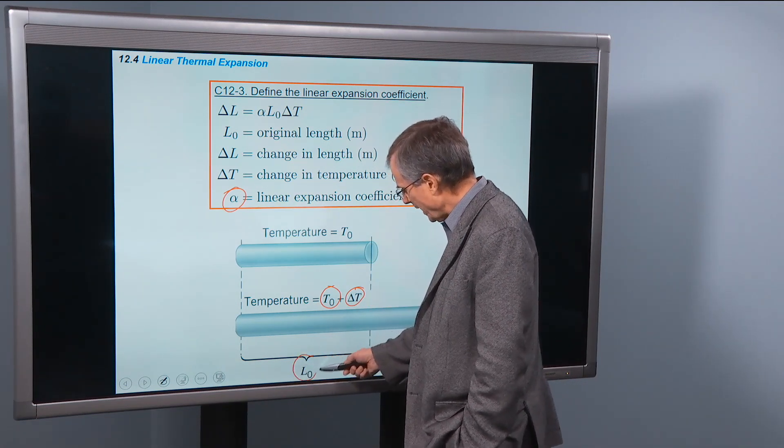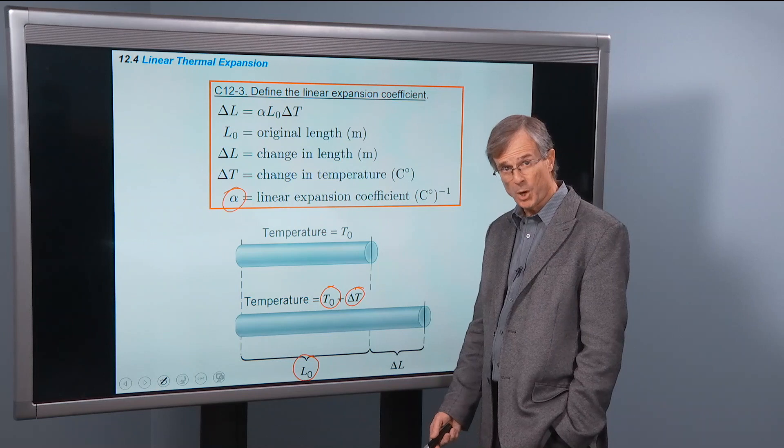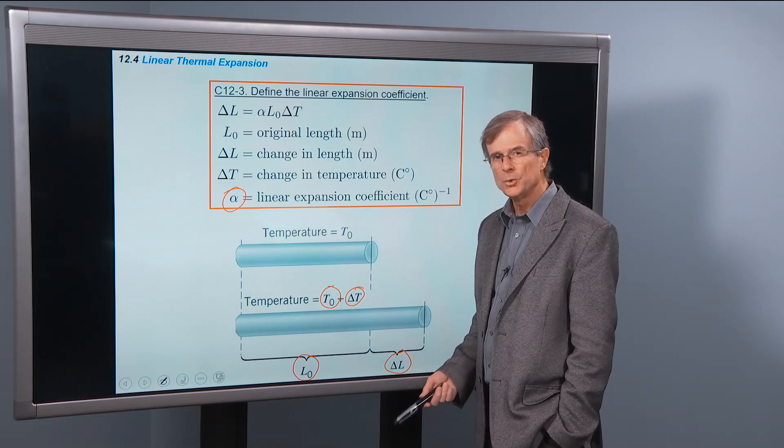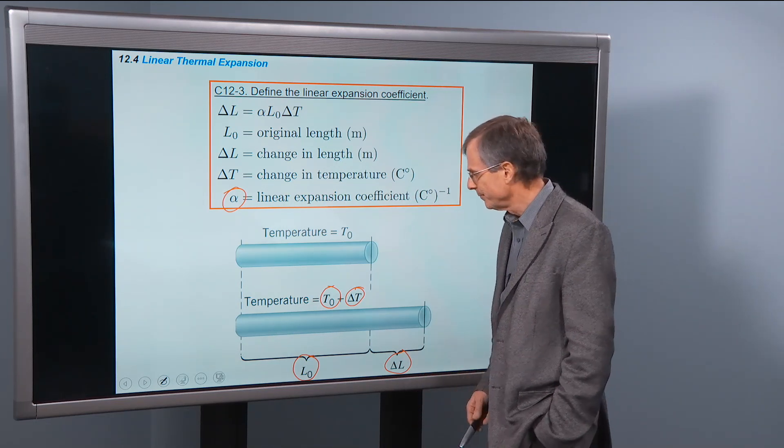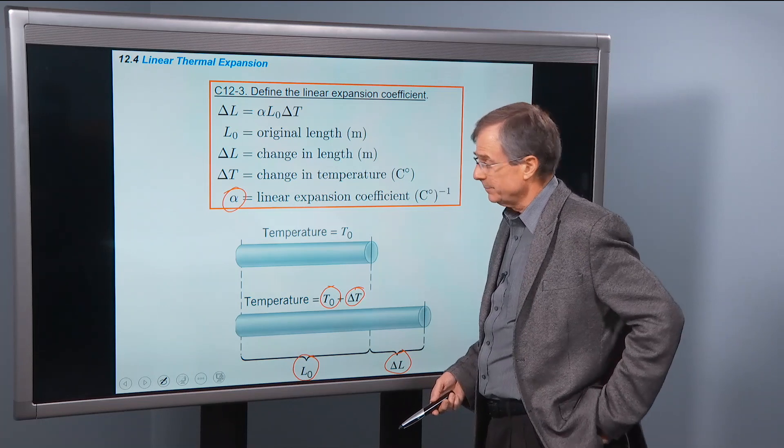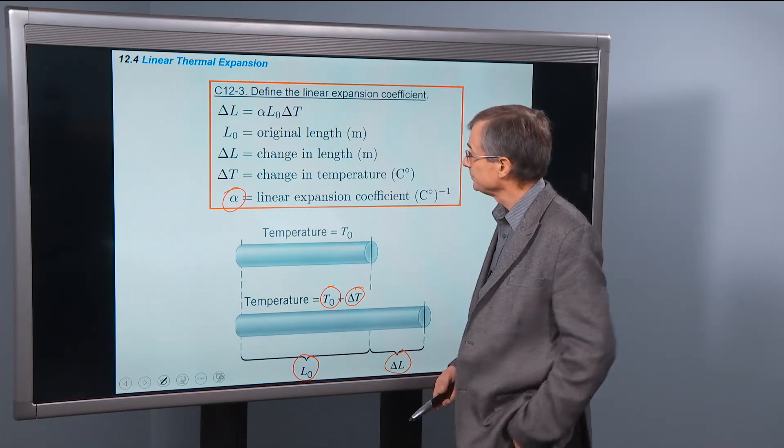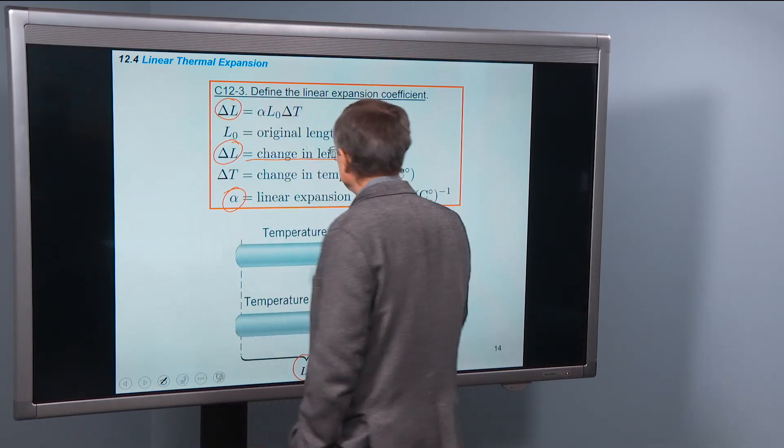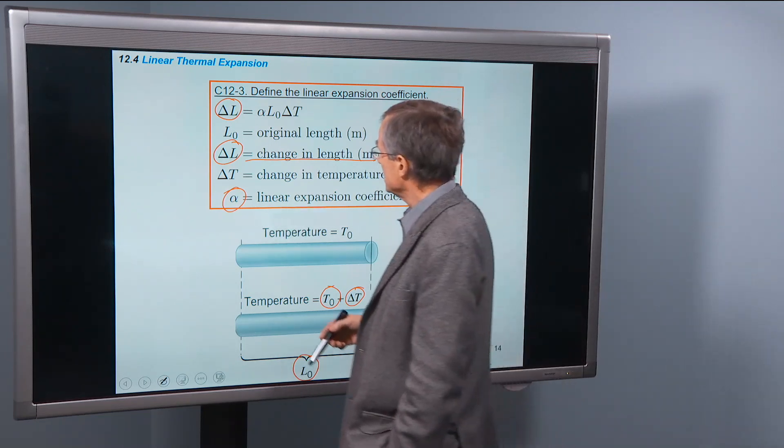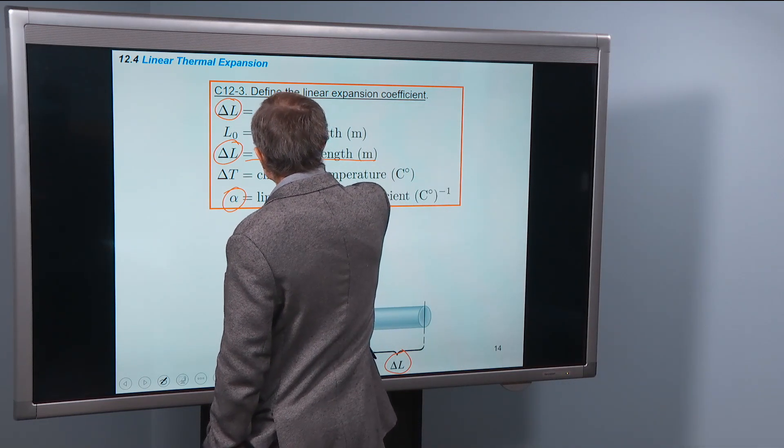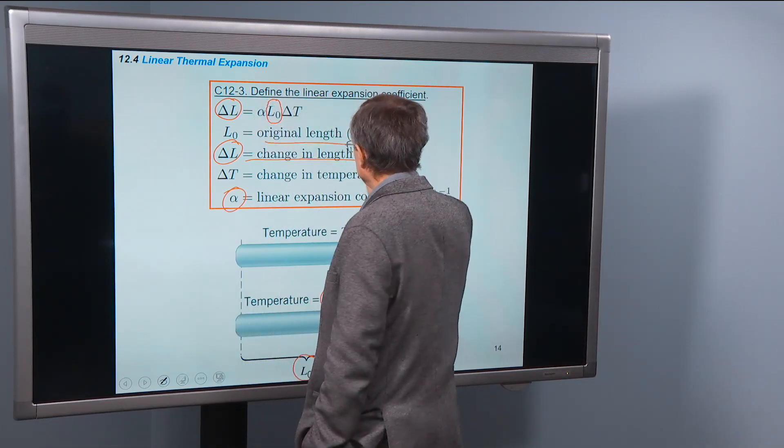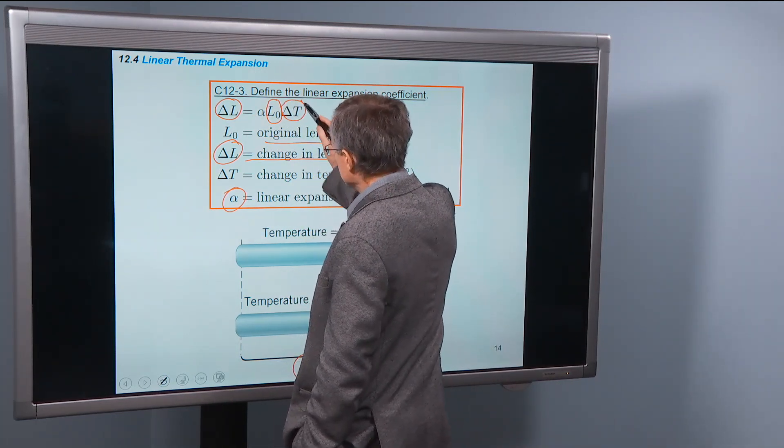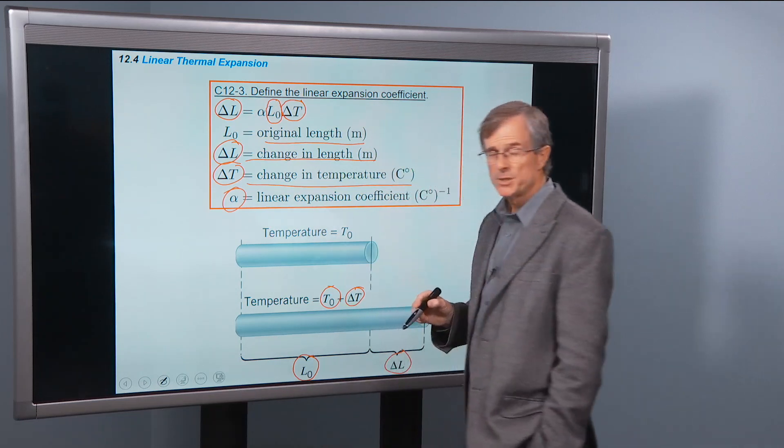L0 is the original length of the bar, and delta L is the change in the length, how much gets added to the length when you heat it up. And that satisfies to an excellent degree this equation: the change in the length, delta L, in meters, is equal to the original length, L0, measured in meters, times the change in the temperature, measured in degrees C.